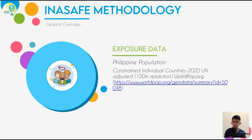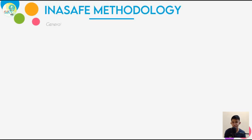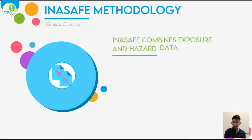An exposure data was also used, available freely from worldpop.org — a free and open population dataset for almost all countries with high-resolution data of 100-meter cell size. InaSAFE combines the exposure and hazard data to estimate the number of people affected, then generates a report and can aggregate results by administrative boundary. InaSAFE can also calculate the minimum needs required to support the affected population and is modifiable according to local requirements.